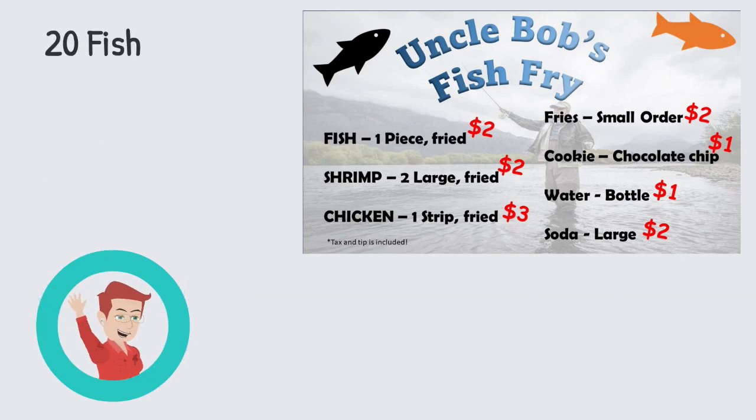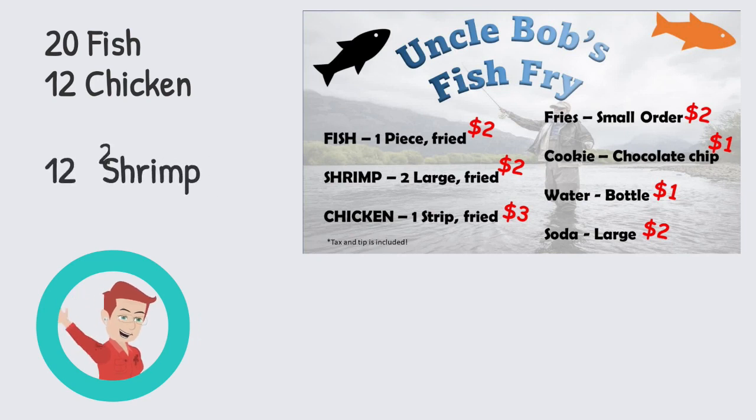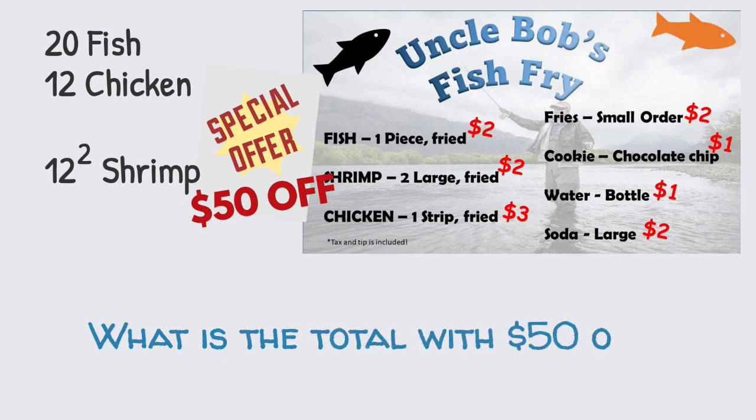Max orders 20 pieces of fish and 12 pieces of chicken. Max also wants a dozen dozen or 12 squared shrimp. What is the total with a $50 off coupon?